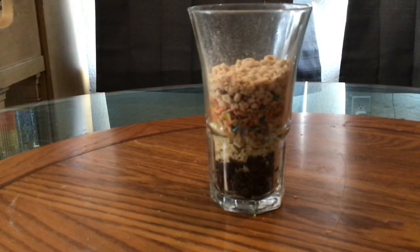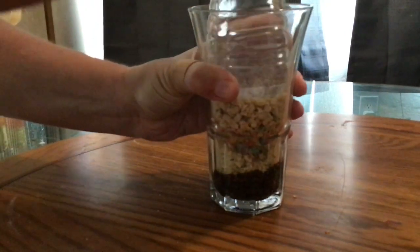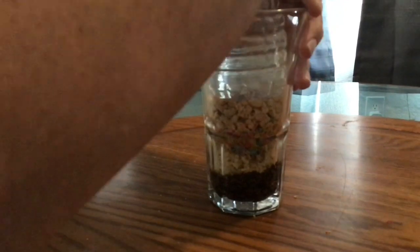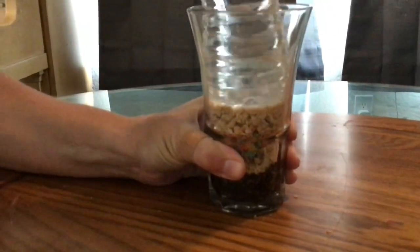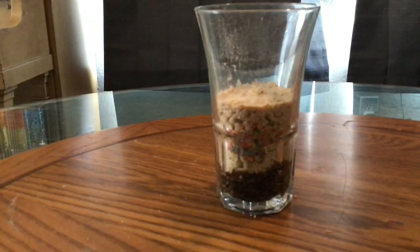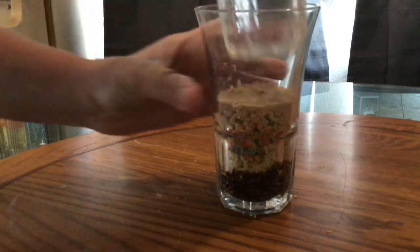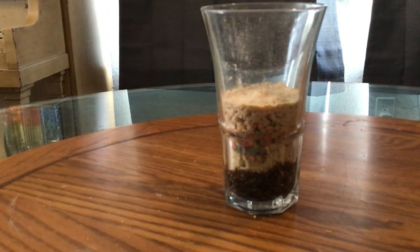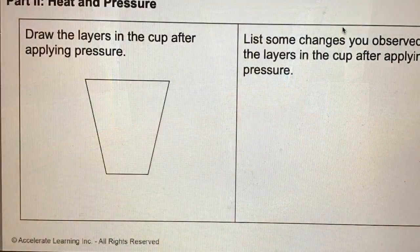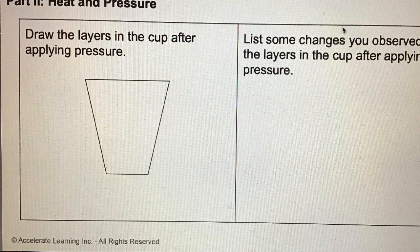Last, I'm going to use a bottle of water to represent heat and pressure. I'm going to place the water bottle on top and press down as hard as I can to represent what would happen over time with heat and pressure, and that will form the coal at the bottom of the cup. The bottom layer is coal, the second layer is sandstone, the third layer is shale, and the top layer is another layer of sandstone. For part two, draw the layers in the cup after applying pressure and then list some changes you observed to the layers in the cup after applying pressure.